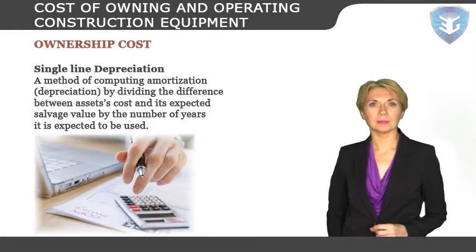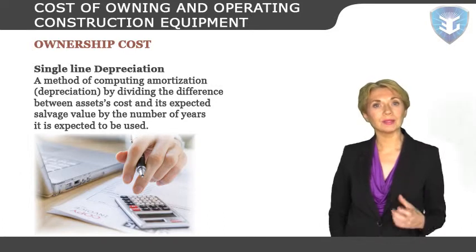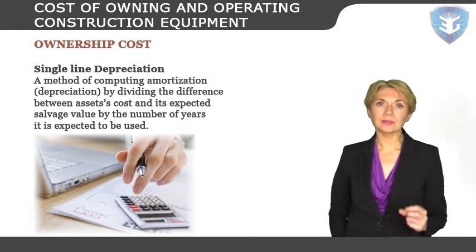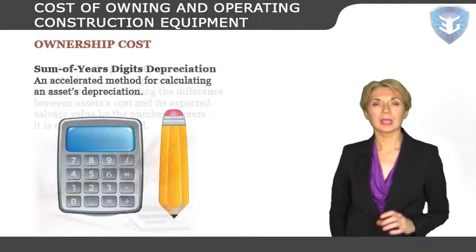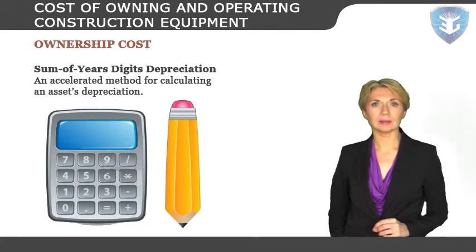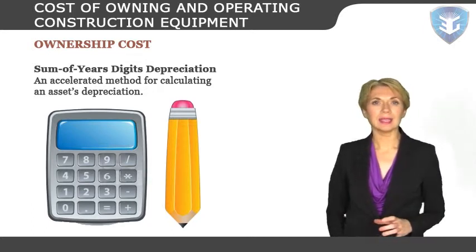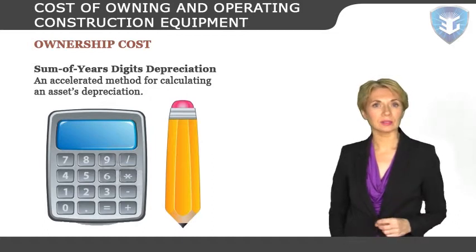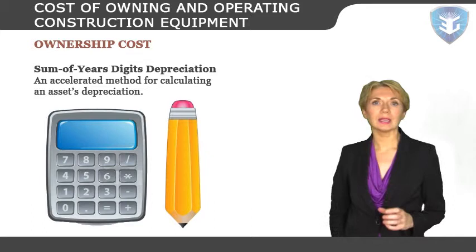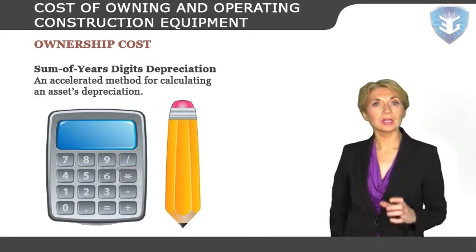Straight-line depreciation is a method of computing amortization by dividing the difference between an asset's cost and its expected salvage value by the number of years it is expected to be used. Sum-of-years-digits depreciation is an accelerated method for calculating an asset's depreciation. This method takes the asset's expected life and adds together the digits for each year. So if the asset was expected to last 5 years, the sum of the years' digits would be 5+4+3+2+1, totaling 15.